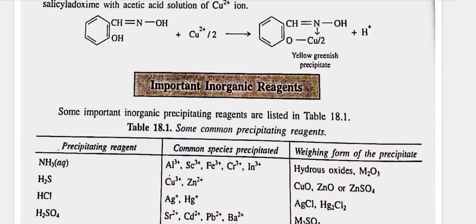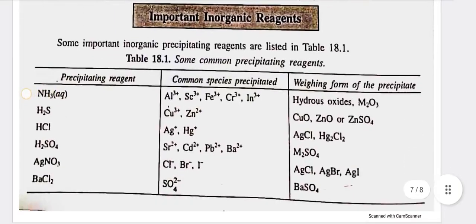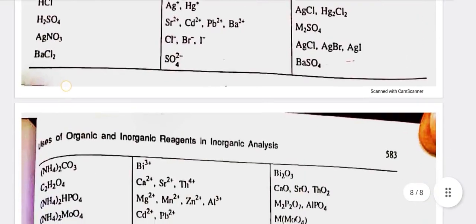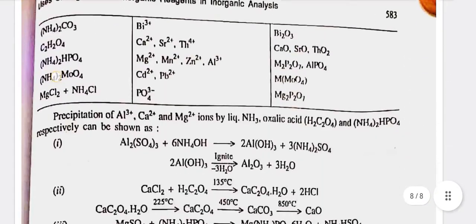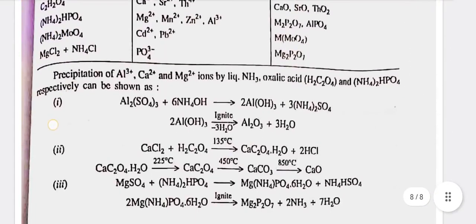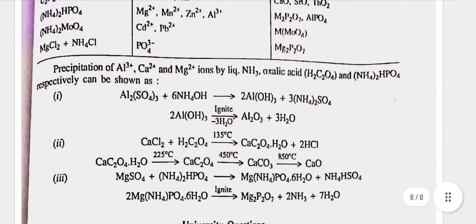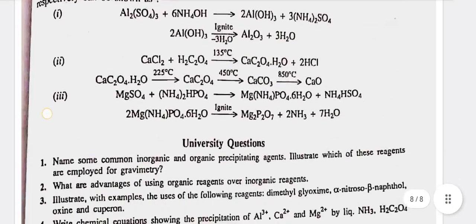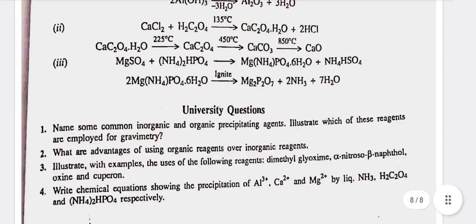Important inorganic reagents: Some important inorganic precipitating reagents are listed in table 18.1. Precipitation of Al³⁺, Ca²⁺, and Mg²⁺ ions by liquid NH3 and oxalic acid respectively can be shown as follows. Thank you.